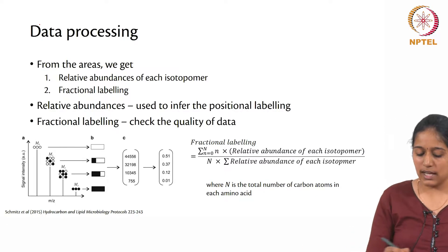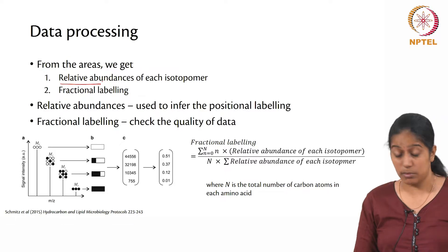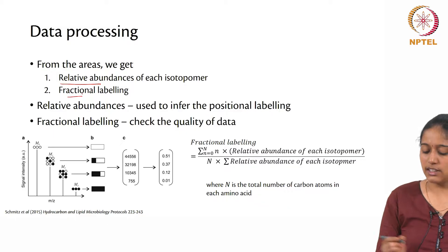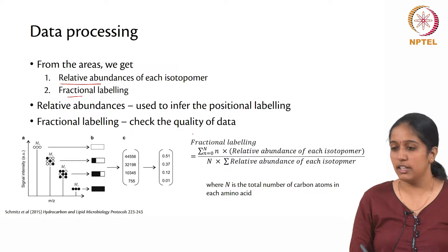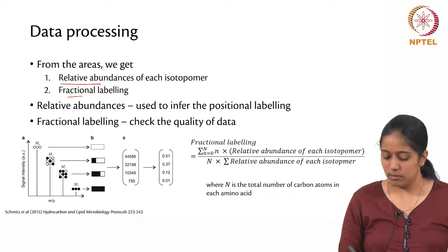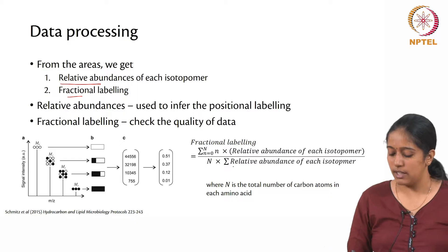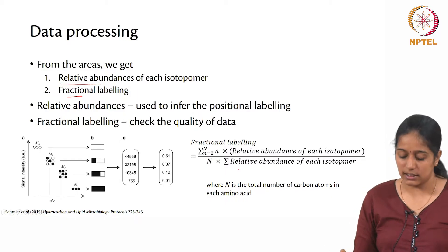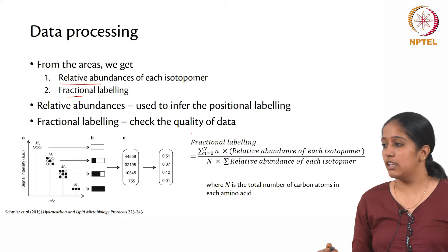Using these areas you calculate the relative abundances of each isotopomer and also the fractional labeling. Fractional labeling is the relative abundance of each isotopomer multiplied by the number of carbon atoms divided by the total number of carbon atoms, summed over all isotopomers. This formula for calculating the fractional labeling is basically used to check the quality of the data that you have.